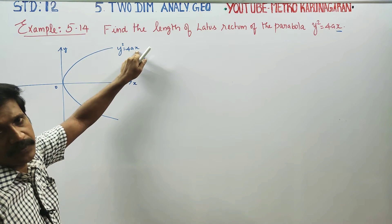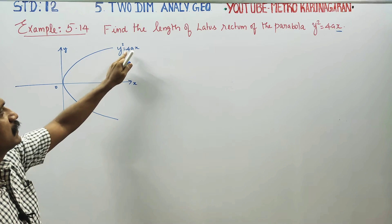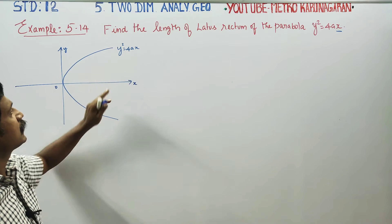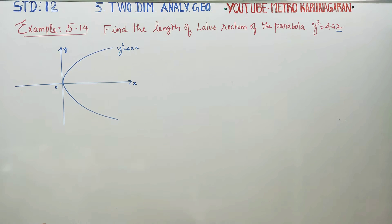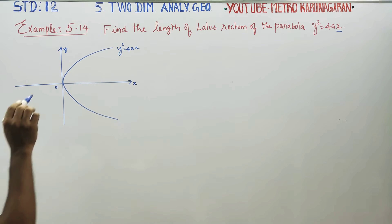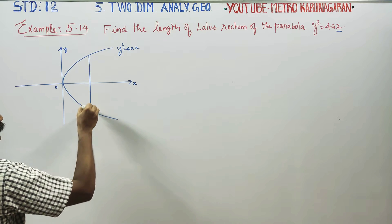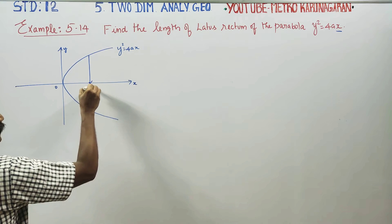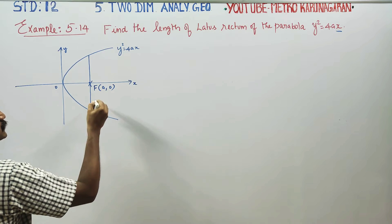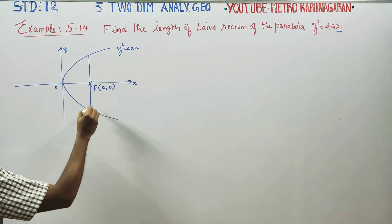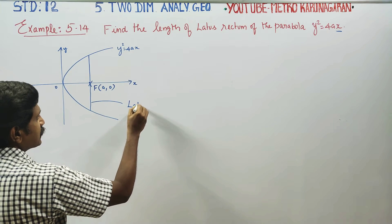Along the x-axis, the positive direction is to the right and the negative direction is to the left. The chord passing through the focus is called the latus rectum. This is the latus rectum.